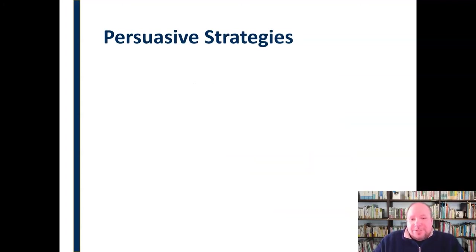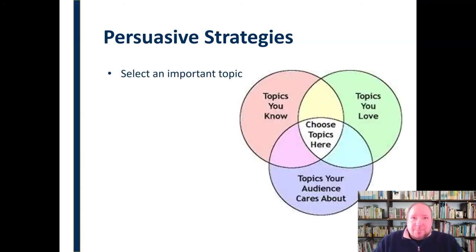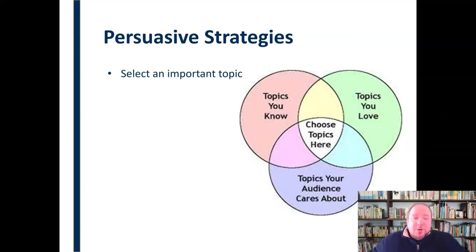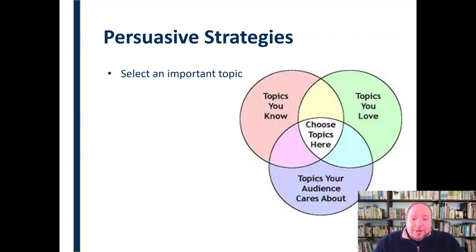There are a couple of different persuasive strategies to keep in mind as we work toward effective persuasive speaking. First of all, we can select an important topic. We talked before in topic selection about topics you know, topics you love, and topics the audience cares about. But it should be something of importance to the audience, something that matters. If we're going to speak to persuade, we shouldn't be wasting the audience's time with something small or something obvious. We need a topic that the audience cares about — something that has at least a degree of importance for them.